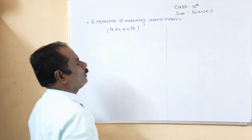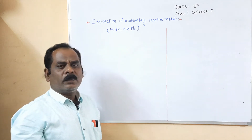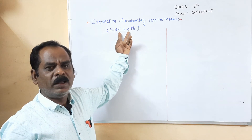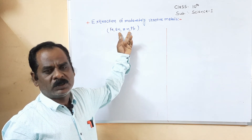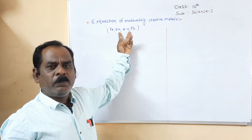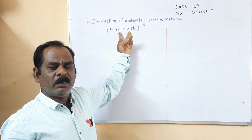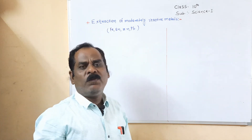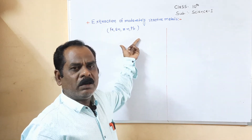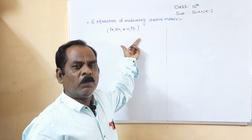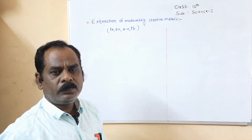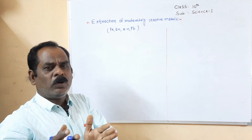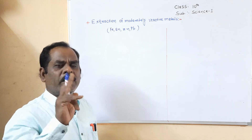These metals are called moderately reactive metals because they are present at the middle position in the reactivity series. One important point to remember: these moderately reactive metals occur in the earth's crust in combined forms, mainly as sulfide and carbonate ores. So how do we extract these metals from sulfide or carbonate ore?